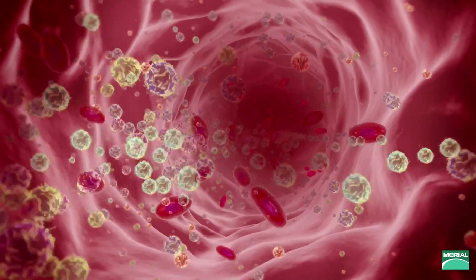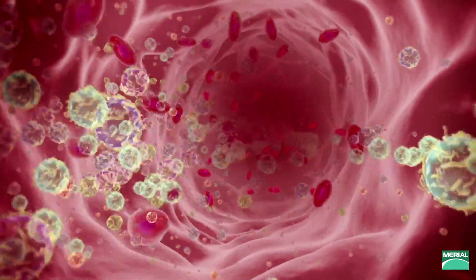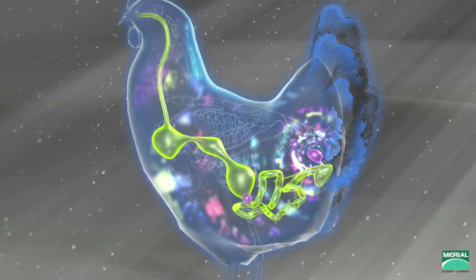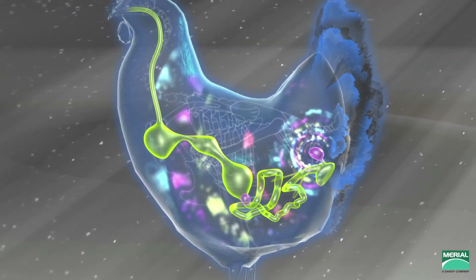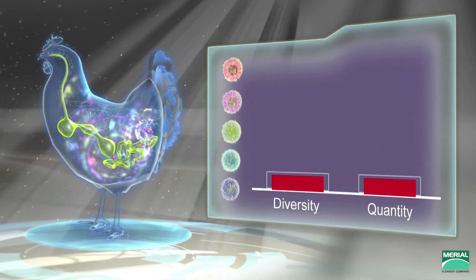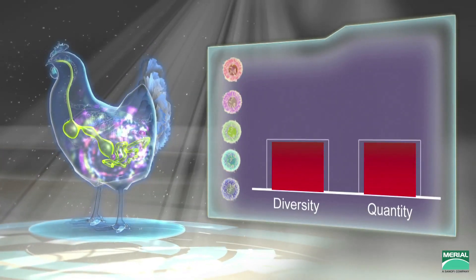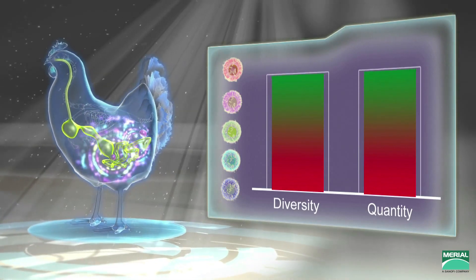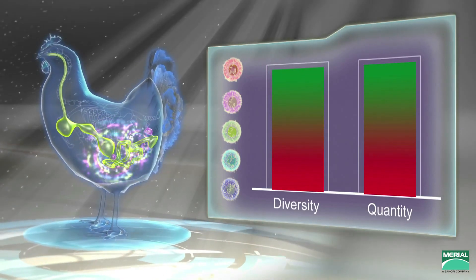Post-hatch, the B cells migrate from the Bursa to the periphery, including the spleen and other secondary lymphoid tissues, where they will play a crucial role in the humoral immune response. The bird's full immunocompetence relies on the Bursa to generate many highly diversified B lymphocytes.